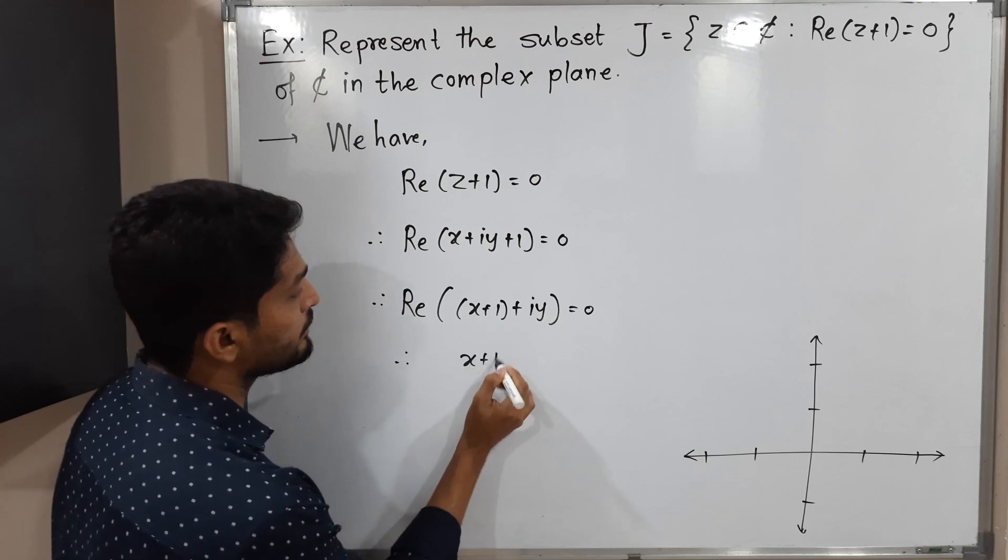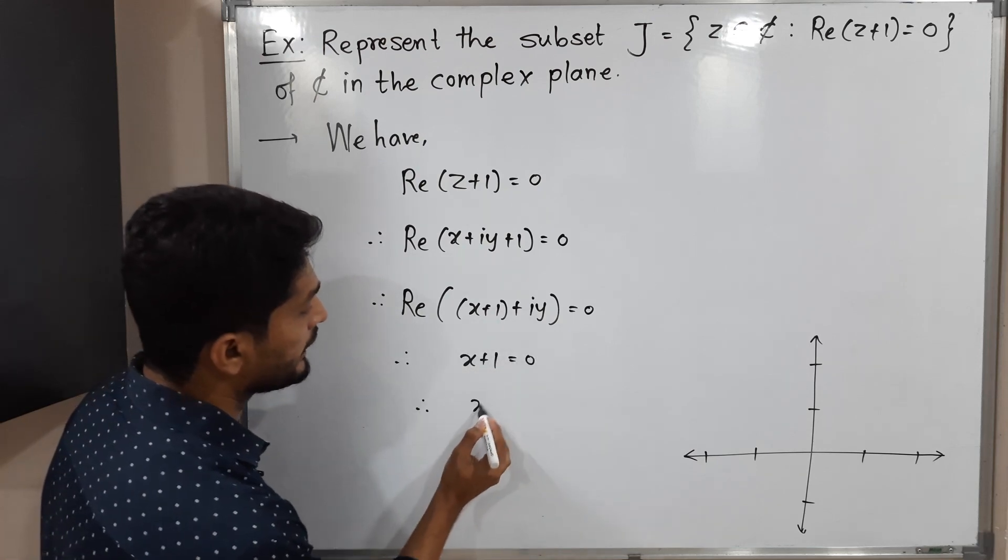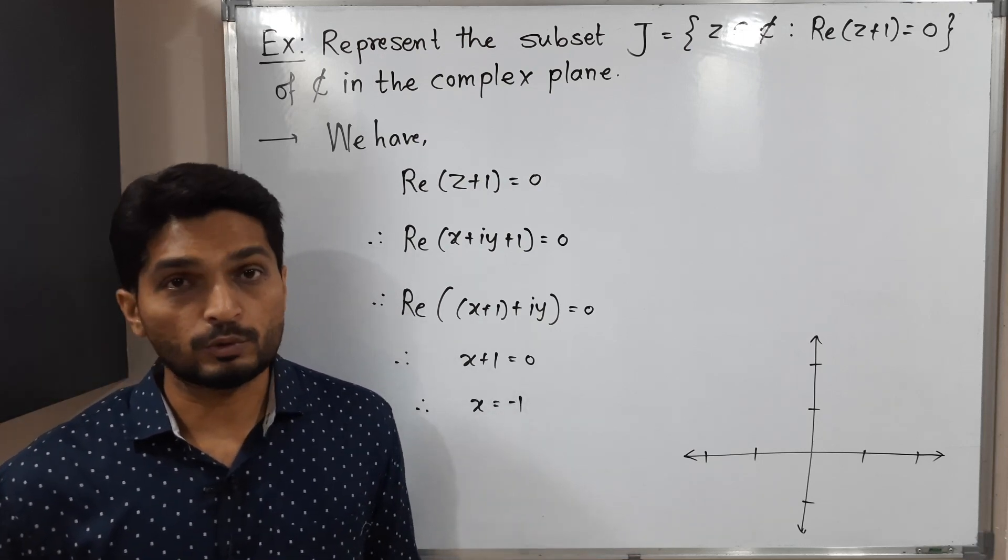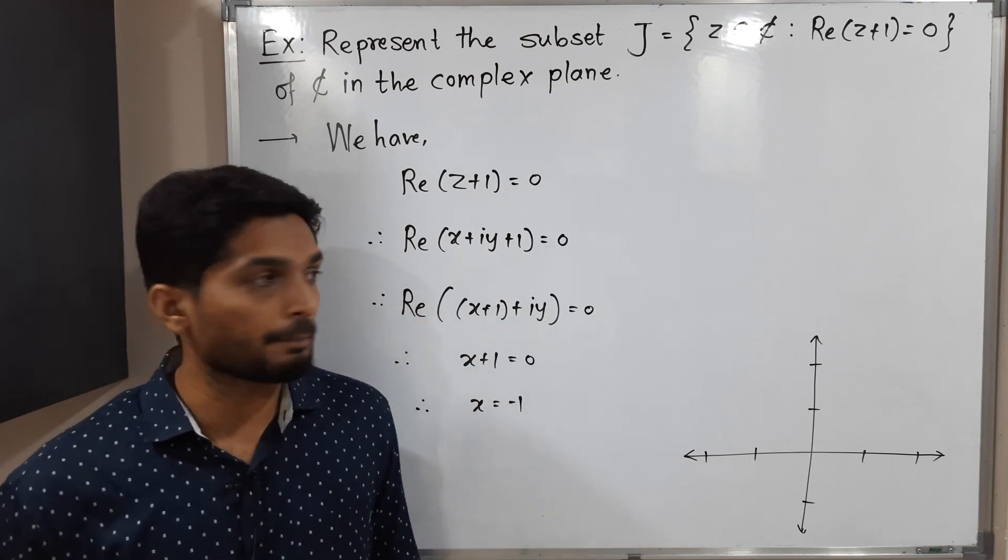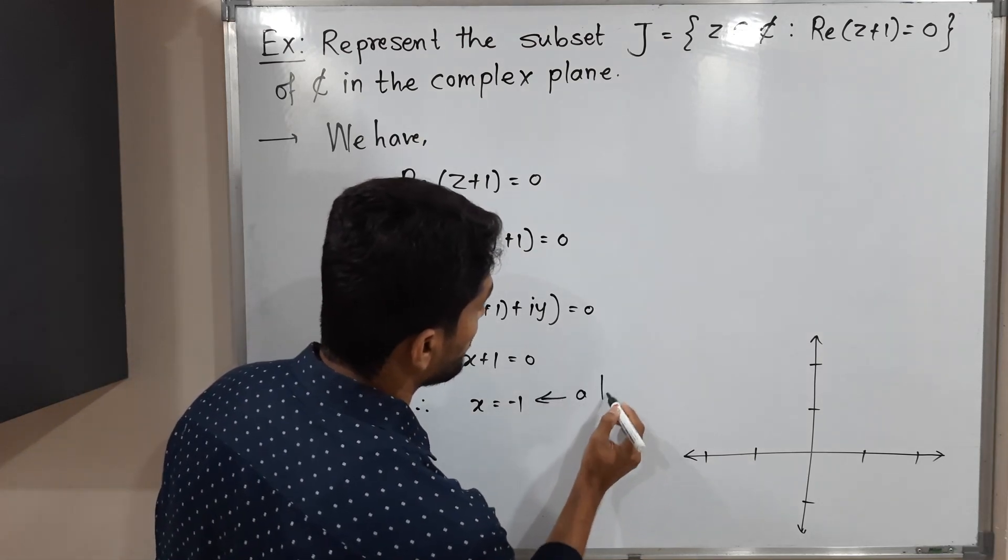Therefore its value will be X plus one equals zero. Let us shift one on that side then it will be minus one. So the equation we finally got is X equals minus one. This is equation of a straight line which is parallel to Y axis and passes through this point X equals minus one.